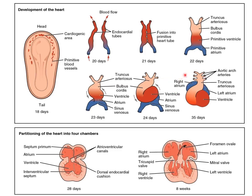This is how the heart appears by the end of the fourth week. One illustration shows how the common atrioventricular canal has been divided into a right and left channel by the formation of the endocardial cushions. Another illustration shows the developed AV valves — the tricuspid valve on the right side and the bicuspid valve on the left side. That was a brief overview of what has already been covered.